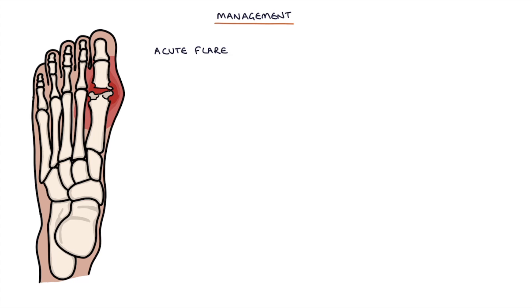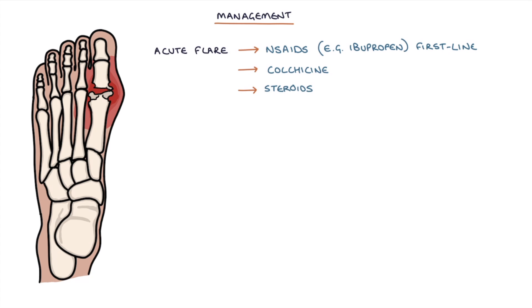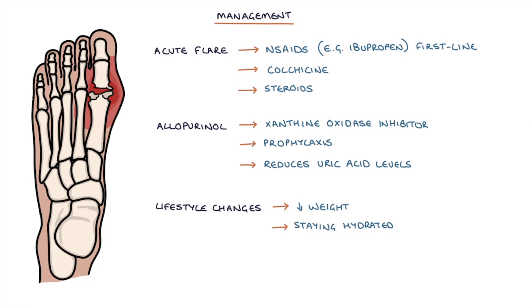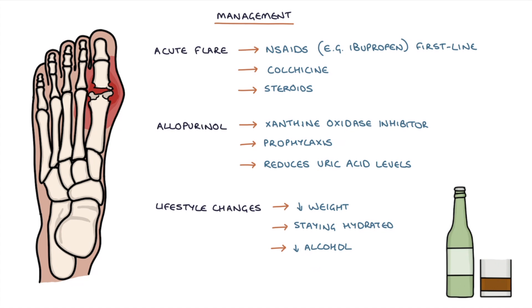Management during an acute flare of gout is with non-steroidal anti-inflammatory drugs — for example ibuprofen — which are used first line. Colchicine is a second-line option, and steroids can be used third line. Allopurinol is a xanthine oxidase inhibitor used for the prophylaxis of gout to prevent attacks by reducing uric acid levels in the blood. Lifestyle changes can also reduce the risk of developing gout, including losing weight, staying hydrated, and minimising the consumption of alcohol and purine-based foods such as meat and seafood.